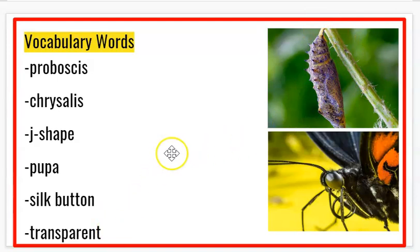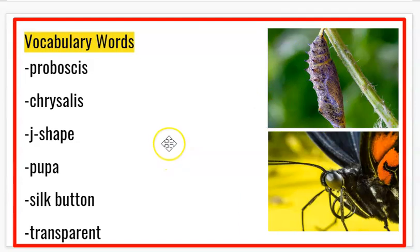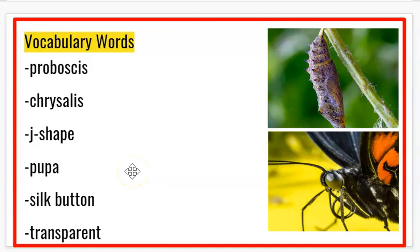The last vocabulary word is transparent. Transparent means it is see-through or it is clear. Sometimes when a chrysalis forms, it is transparent and you can actually see the butterfly forming inside.